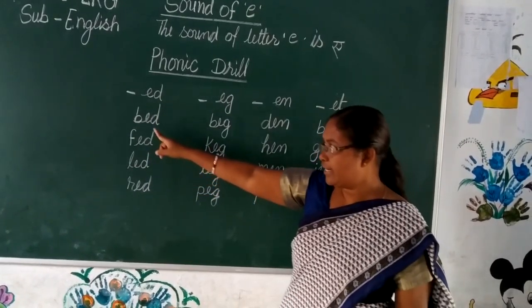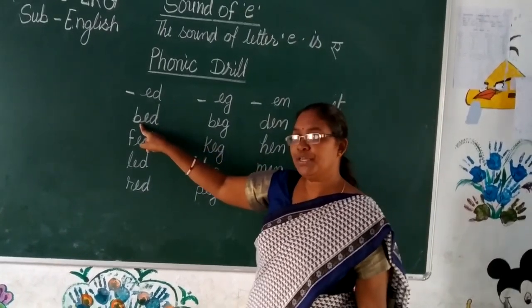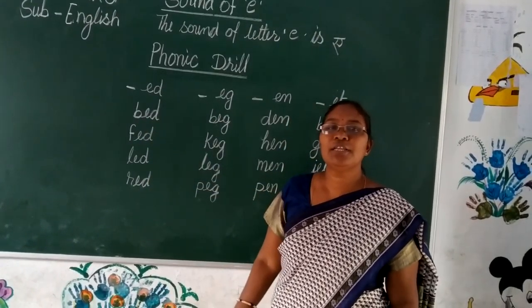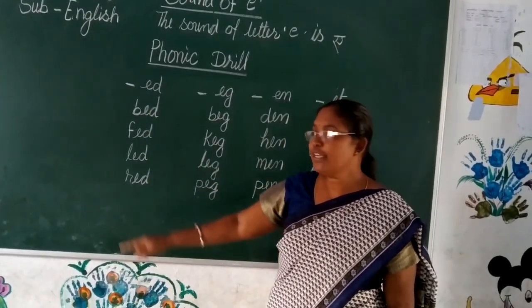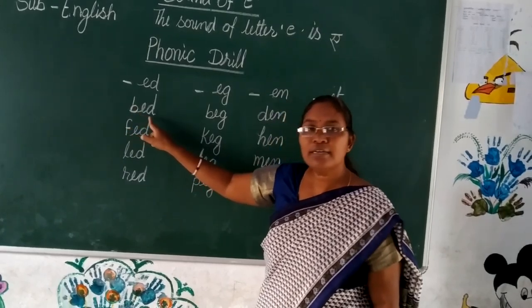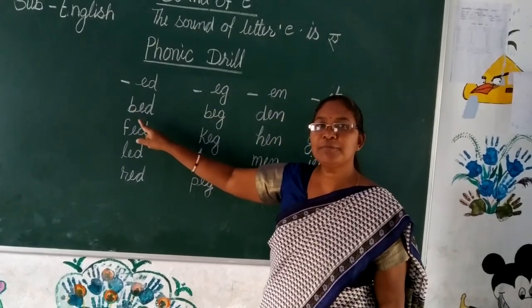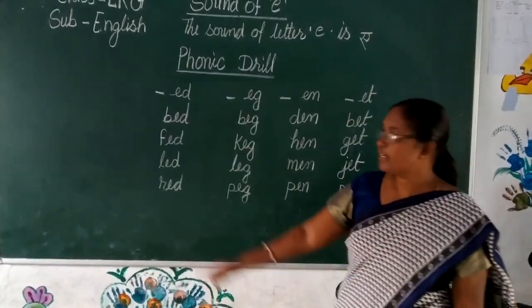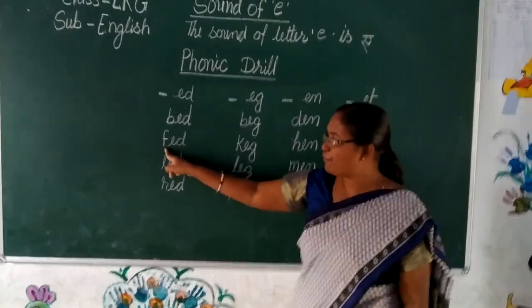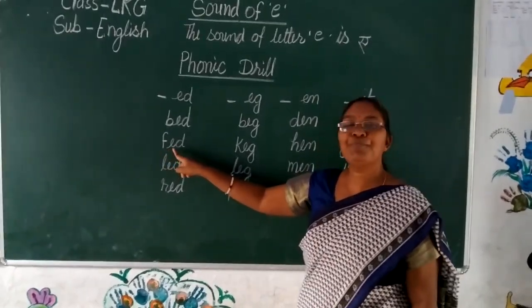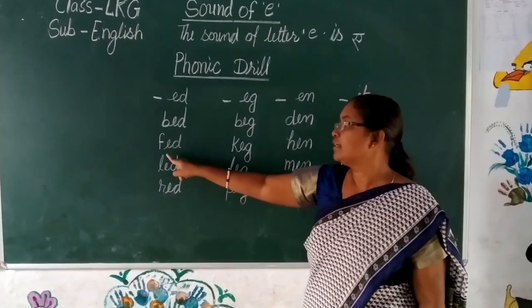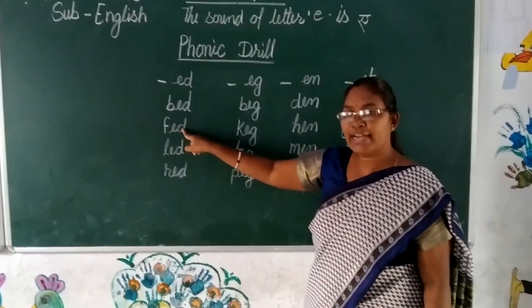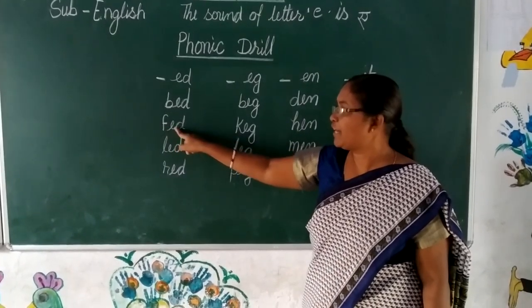We added letter B before E. The phonic sound is 'b' — 'bed' and 'bet'. We added letter F before E. The phonic sound is 'f' — 'fed' and 'fen'.